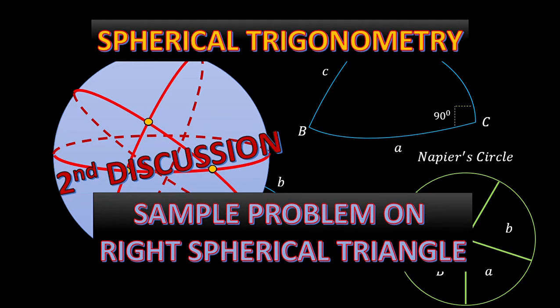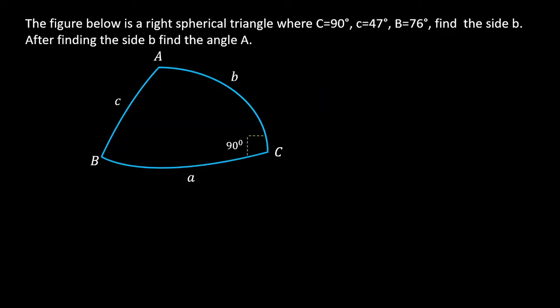In our first discussion we already discussed the right spherical triangle and the rule on how to solve it. To understand more, we will be giving a sample problem. The figure below is a right spherical triangle where C is equal to 90 degrees. The side c is 47 degrees and the angle B is 76 degrees. We are required to find the side B and then the angle A.